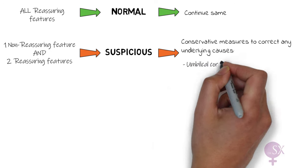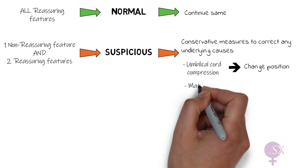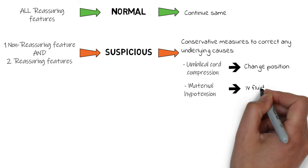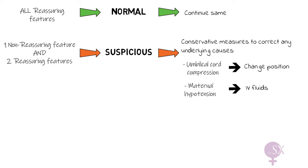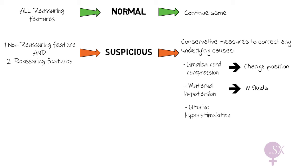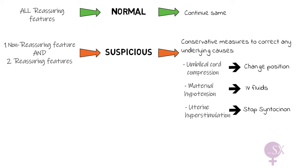For a suspicious CTG we should try to perform conservative measures to correct any possible underlying causes. These may include umbilical cord compression — we try changing to the left lateral position to relieve the pressure. Maternal hypotension, which can occur after an epidural is sited, is corrected by giving IV fluids. Uterine hyperstimulation can be corrected by stopping syntocinon to calm down the uterine contractions.